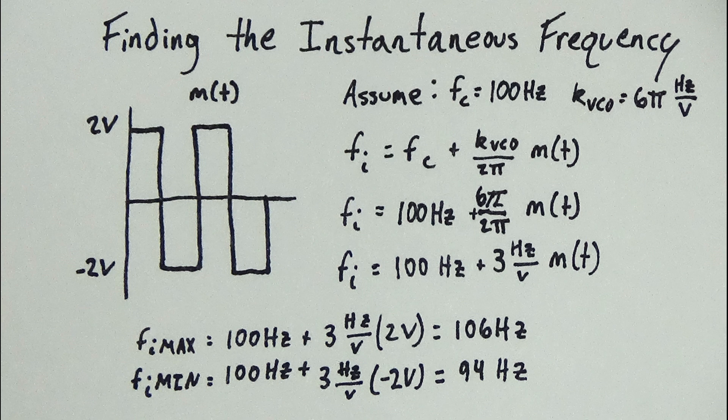it will alternate between these minimum and maximum frequencies because the message is a square wave. Once you can calculate the minimum and maximum frequency range, you can dial in specific frequencies for a given amplitude because there is a linear relationship between these minimum and maximum points.